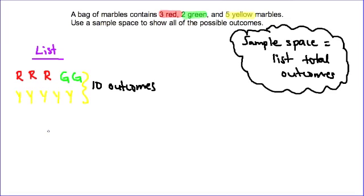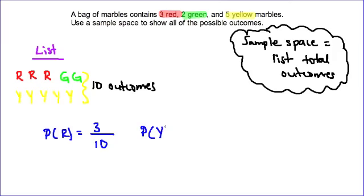For instance, if we want to know the probability of getting a red marble, we can count up that we have 3 red marbles out of our total 10 possible outcomes. Likewise, if we want to find the probability of a yellow marble, we have 5 yellow marbles out of a total of 10, which simplifies to 1 over 2.